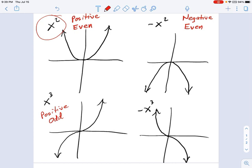And even if you had x to the 5th, it wouldn't look a whole lot different. It would just look maybe like this. But it would still have the general shape. And then over here, you have negative odd. So those are the four types of end behavior.